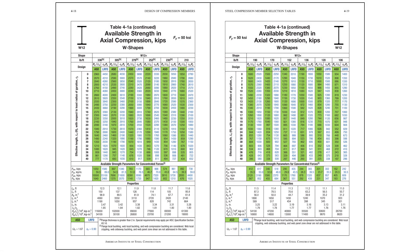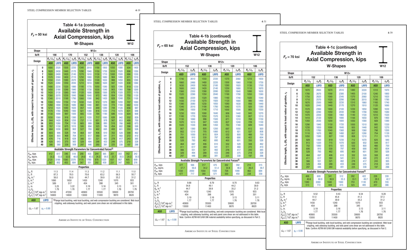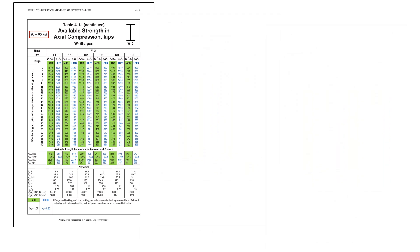Alternatively, once we know the effective length factors, we can use the design tables in Chapter 4 of the AISC steel construction manual to determine the available strength. The available strength of the W12x152 is tabulated for 50 ksi steel on page 4-19. The 16th edition includes tabulated strengths in three grades: Grade 50 in Table 4-1a, Grade 65 in Table 4-1b, and Grade 70 in Table 4-1c. For this example we want the W12x152 with F_y = 50 ksi.